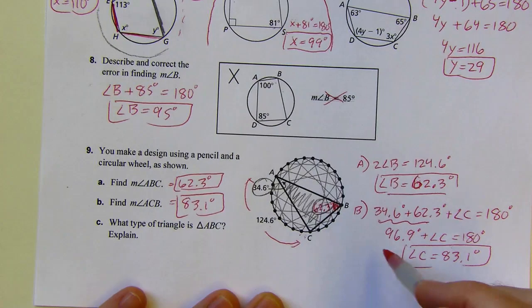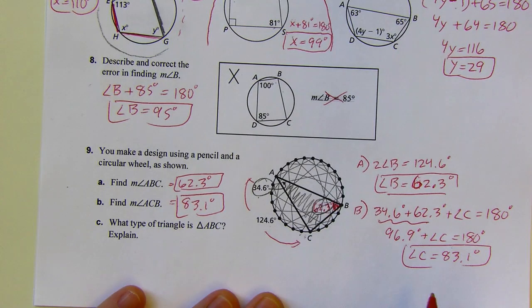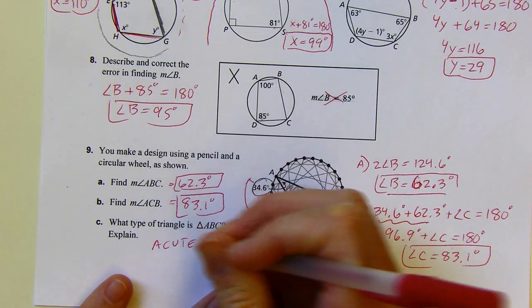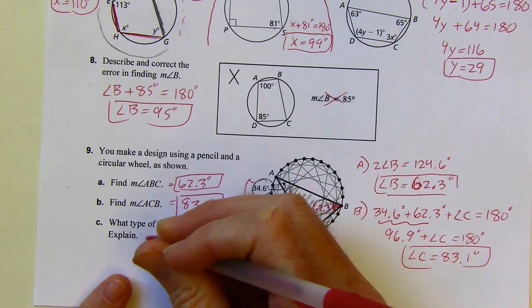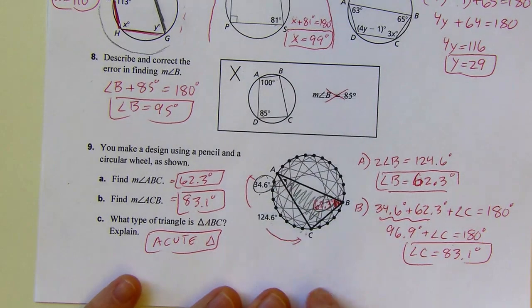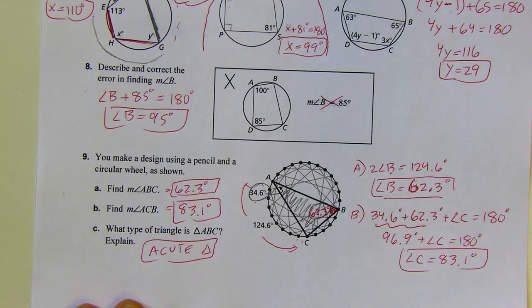Okay, what type of triangle have I got? Well, if you look at the measures, all three of these angle measures are acute. So this is an acute triangle. Explanation: all three angles are acute. And there we go. That's the end of the practice assignment. See you next time.